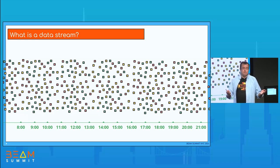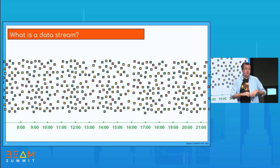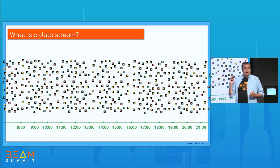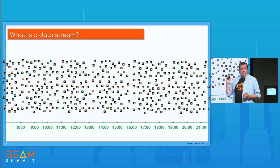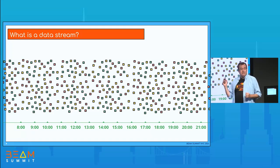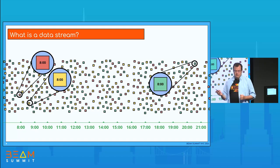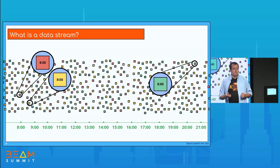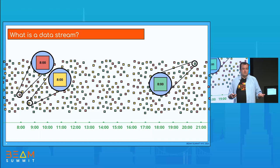Here we have data coming in at different times. Different colors represent different keys for the data. Having a key-value stream is going to be essential for the rest of this talk, because we don't want to sort the stream entirely — that would be kind of impossible since we don't know the limits of the stream. But if we use keys, we can have some boundaries. Streams are also coming out of order, and this is one of the main features of streaming.